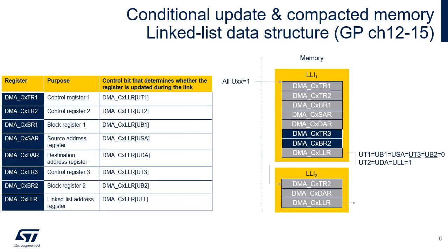The CX LLR register of channels 12 to 15 supports two additional bits, UT3 and UB2, used to determine whether the CX TR3 and the CX BR2 registers will be updated during the link. In the example on the right, it is assumed that only the CX TR2, CX DAR, and CX LLR registers will be updated when linking from LLIN to LLIN plus 1.